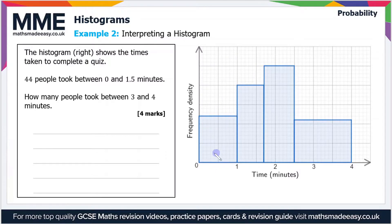Well from zero to one minutes we've got 10 squares across and 12 squares tall. So this area is 10 times 12 which is 120 squares, and then between 1 and 1.5 minutes...